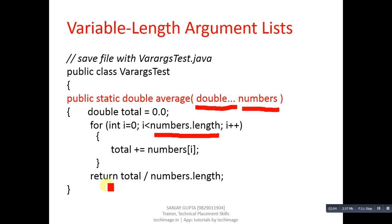Then with the help of return statement the average of the total will be returned in the main function. So total upon numbers dot length - total will be the addition of all the elements and numbers dot length means quantity of those elements.